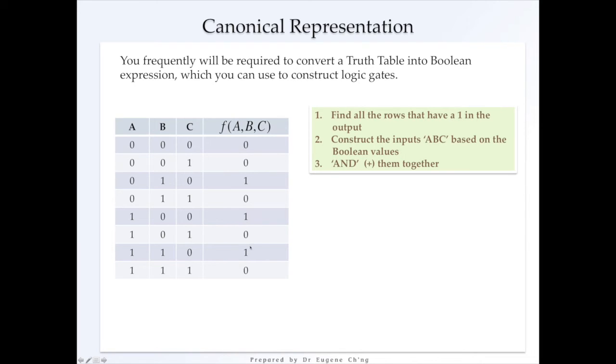So that's 1, this is another 1, and that's another 1. Now, after that, you have to construct the inputs A, B, C based on the Boolean values. And you OR them together.